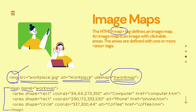In the map element, the name attribute will have the same value that we used in the useMap attribute of the img tag. Here I have written 'workmap', so obviously I will also write 'workmap' in the name attribute. And as I have told you, for clickable areas, you use area tags. I have created three clickable areas, so I have used three area tags here.